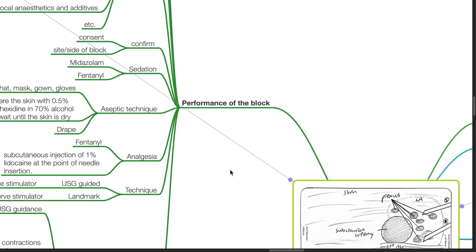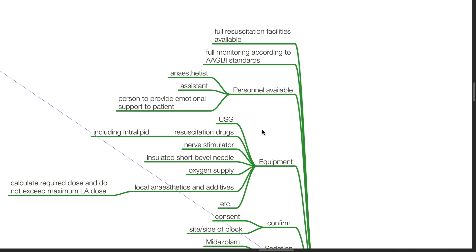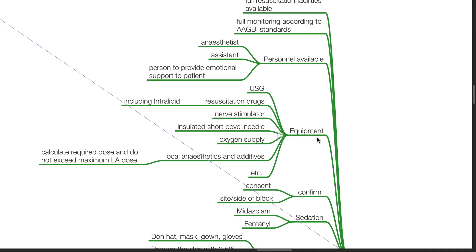Performance of the block. Full resuscitation facilities must be available and full monitoring according to AAGBI standards. Available personnel should include anesthetist, assistant, and the person to provide emotional support to the patient. Equipment needed includes the ultrasound, resuscitation drugs including intralipid, nerve stimulator, insulated short bevel needle, oxygen supply, local anesthetics, and additives.